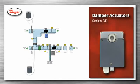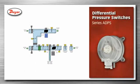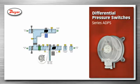Damper actuators, series DD, are used to open and close dampers to change the airflow through the air handler. Differential pressure switches, series ADPS, are used as a frozen coil alarm by monitoring the pressure loss across the coils in the duct to indicate a frozen coil condition. They are also used as a dirty filter alarm by monitoring the differential pressure loss across the filter.